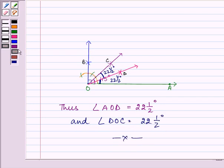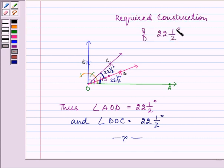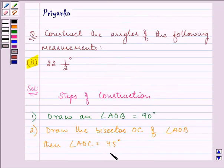So this was our required construction of 22 and a half degrees. First you should be well versed with the construction of 90 degrees, then 45 degrees and then it will be easier for you to draw the 22 and a half degrees angle. So this completes my session. Hope you enjoyed.